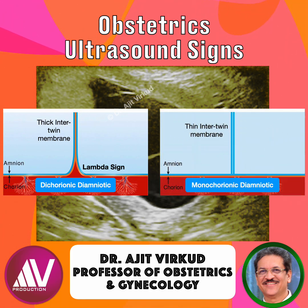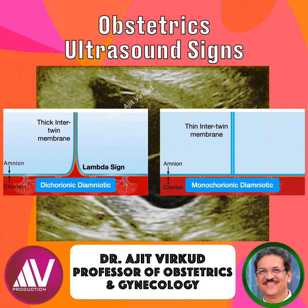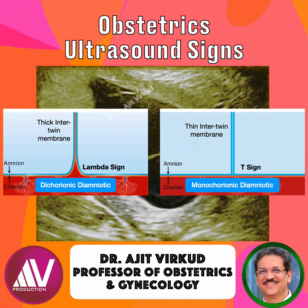In monochorionic diamniotic twins, the membrane is thin, made of two amniotic layers only, and it inserts at a straight angle into the placenta, forming the T-sign.